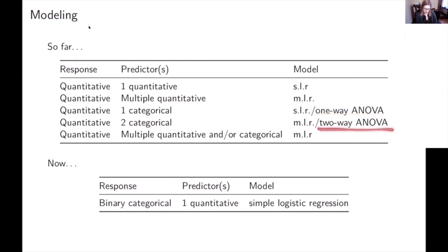And then we also did two-way ANOVA, where we had a quantitative response variable and two categorical predictors, but again, that's basically just multiple linear regression, just a different way of thinking about it.